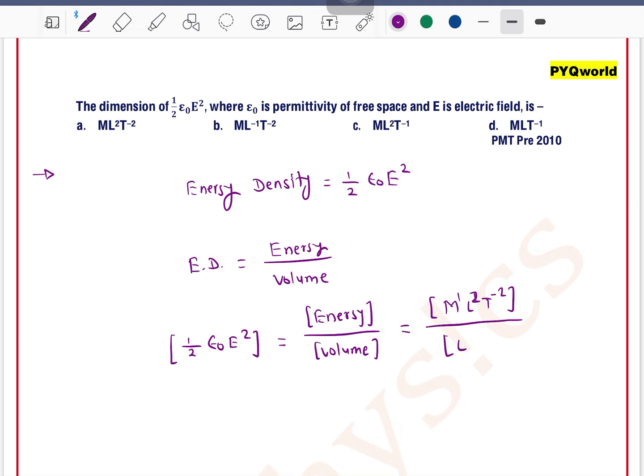So combined we can say dimension of half epsilon 0 e square is m1 l minus 1 t minus 2. So m1 l minus 1 t minus 2, option b. Option b is the correct one.